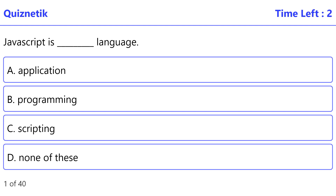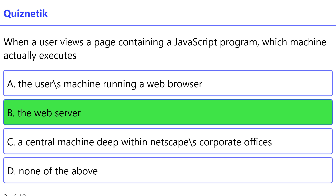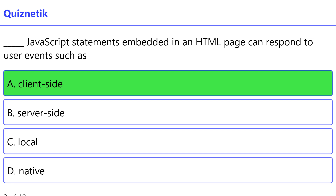JavaScript is a scripting language. Correct option is C: scripting. When a user views a page containing a JavaScript program, which machine actually executes the script? Correct option is B: the web server. JavaScript statements embedded in an HTML page can respond to user events such as mouse clicks, form input, and page navigation.